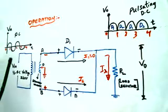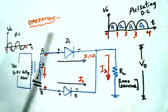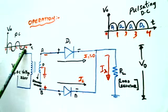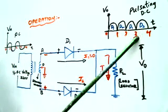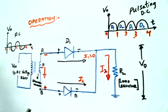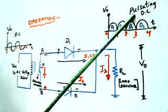Hence in full wave rectifier operation, we get output for both the positive half cycle and the negative half cycle. Similarly for range 2 to 3 (positive half cycle) output is obtained due to D1, and for range 3 to 4 (negative half cycle) output is obtained due to D2. In full wave rectifier, the AC input signal is converted to pulsating DC. This pulsating DC is impure DC, meaning it still has AC components, and to remove those AC components we use a filter circuit.